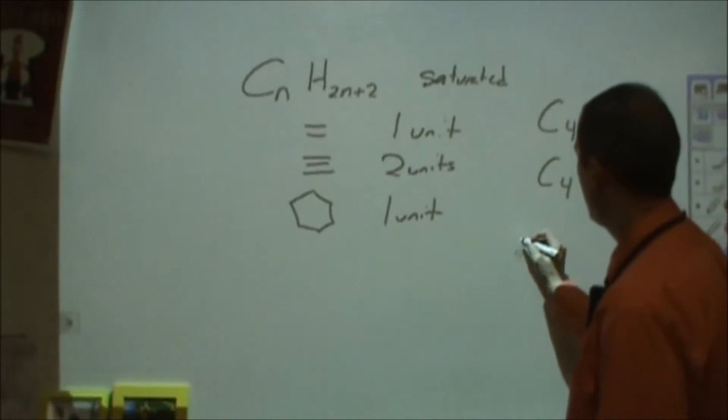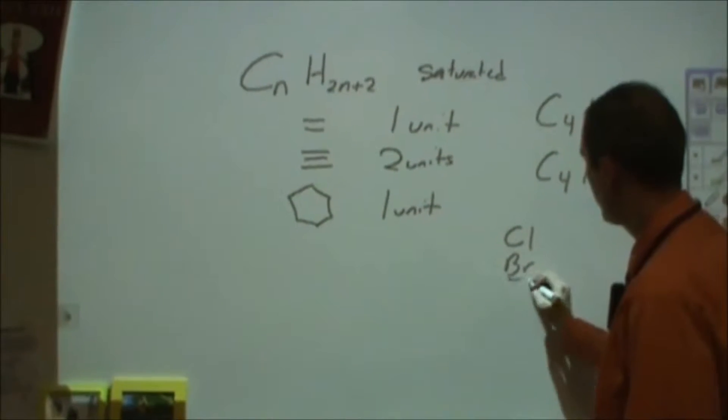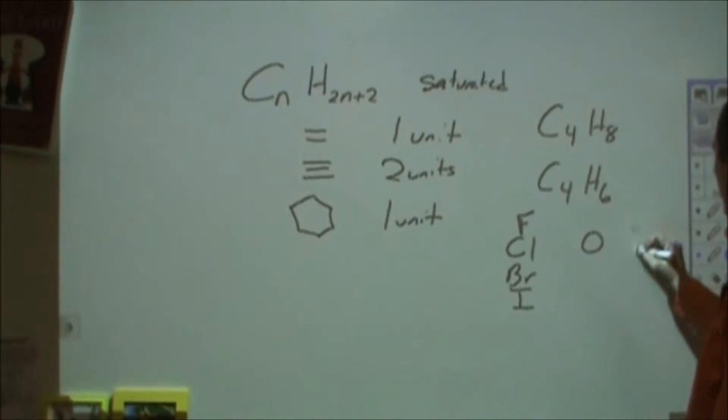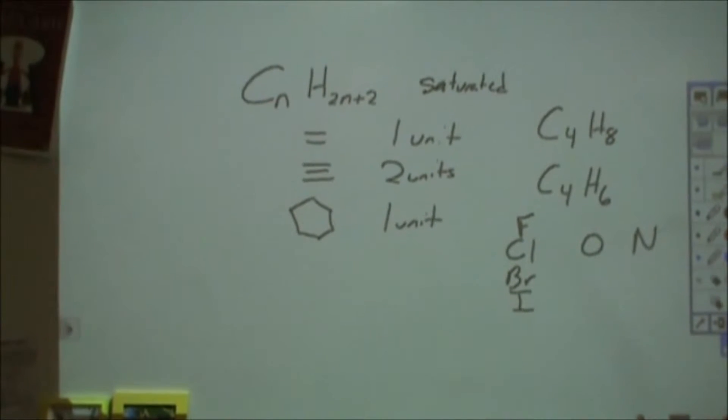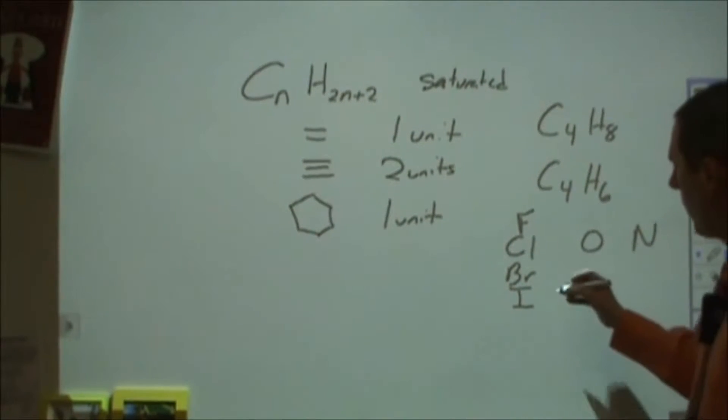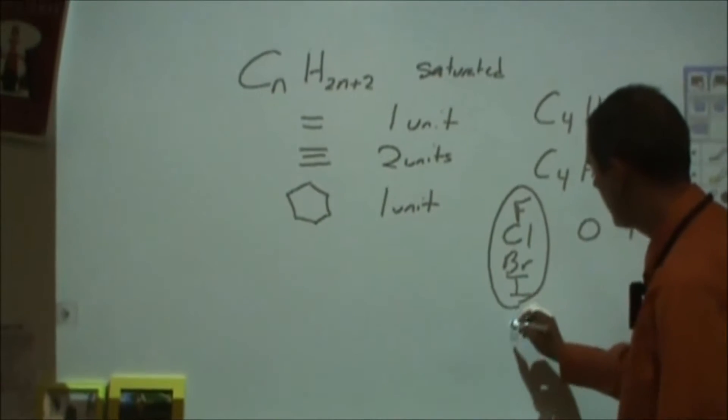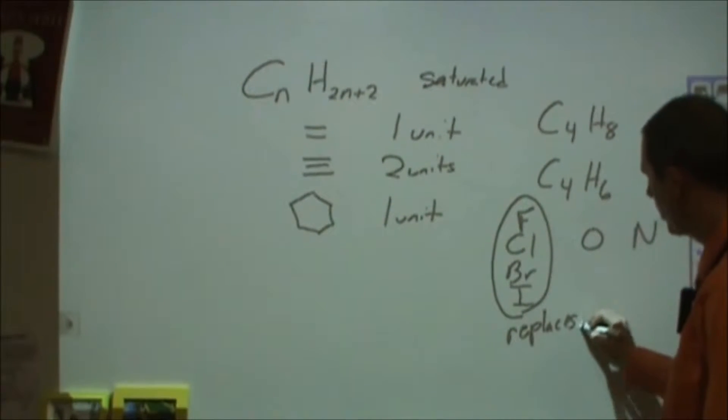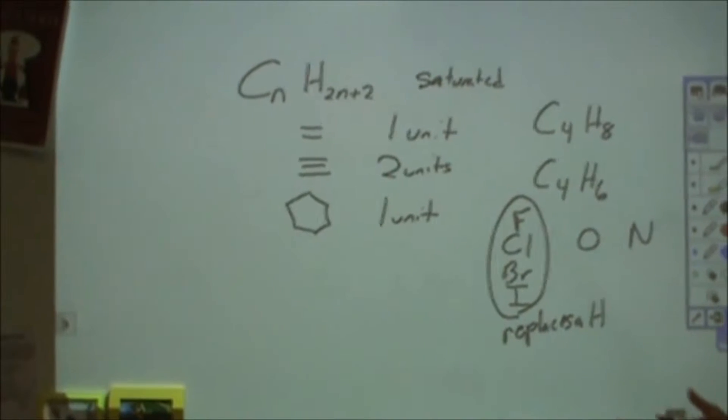So if I have a halogen like chlorine, bromine, iodine, or fluorine, or if I have oxygen or sulfur, or if I have nitrogen, what does that do? And the key to understanding that is how does that affect my hydrogens? So what we want to think of for the halogens is that replaces a hydrogen. We'll show why in a second. And so we count those as hydrogens.